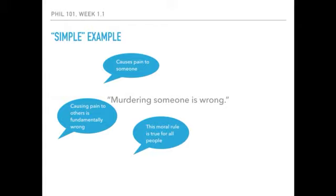Note that how someone responds to this debate will have bearing on whether we can say murdering someone is wrong. A relativist might argue that it's only wrong if you live in a culture that deems murder to be wrong. If you live in a culture that condones murder, there would be nothing wrong with murder. So you can see how this assumption becomes controversial. Someone holding that causing pain to others is fundamentally wrong is holding a non-relativistic approach to morality — they are really making a big statement about the nature of morality.